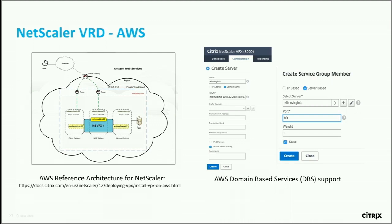We have a VRD on AWS similar to Azure. If you're curious about how to do these configurations, what the screens look like, or how many steps it takes to configure services like domain-based auto scaling, that is all in our document. Search 'NetScaler VRD and AWS' to find it — a huge cookbook giving you all the detail about individual features.